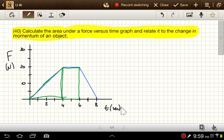So, rectangles and triangles for the most part. So, this one, my triangle, I'll have 1 half times 4 seconds times 20 newtons. So, that's going to equal 40, and the units there are newton seconds.